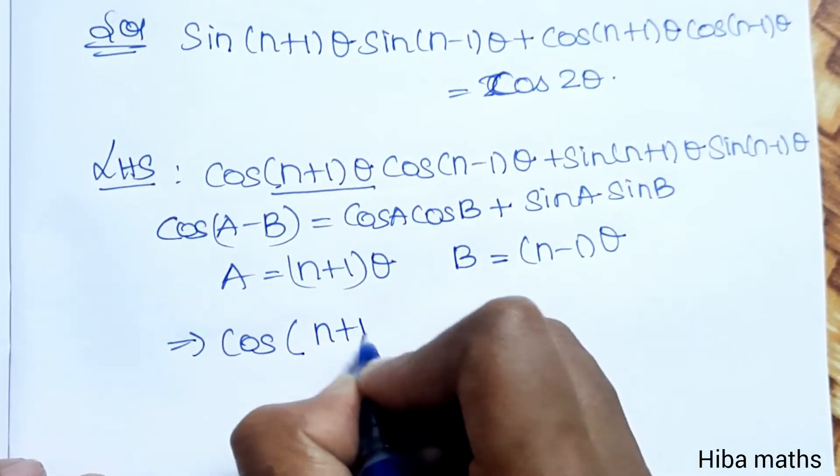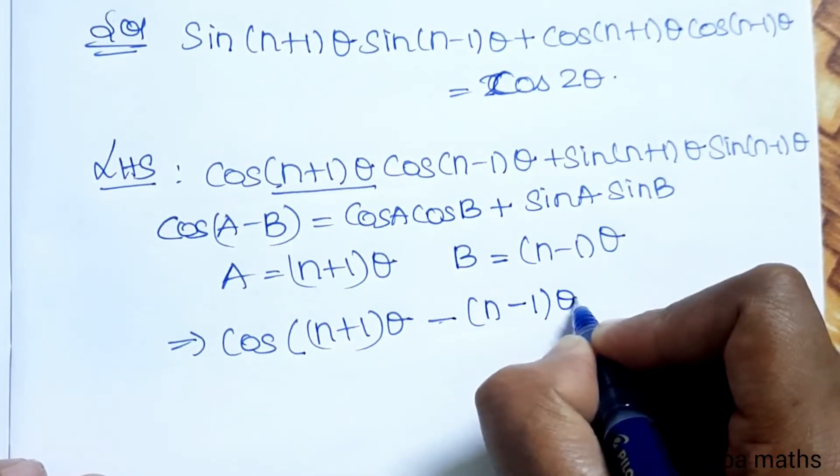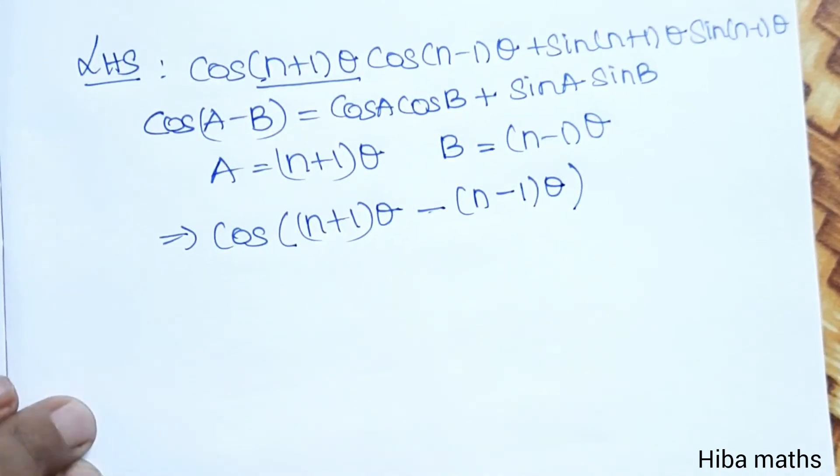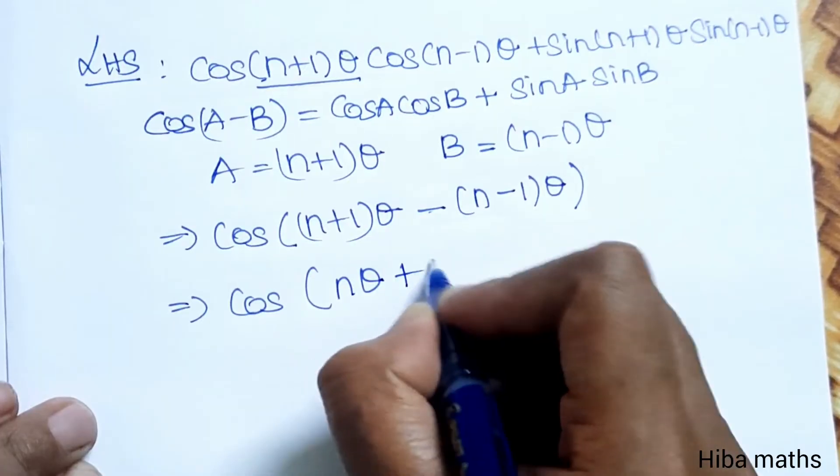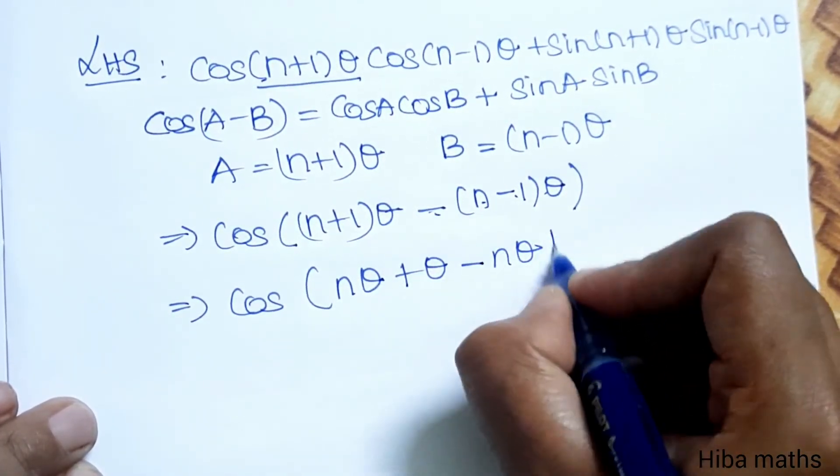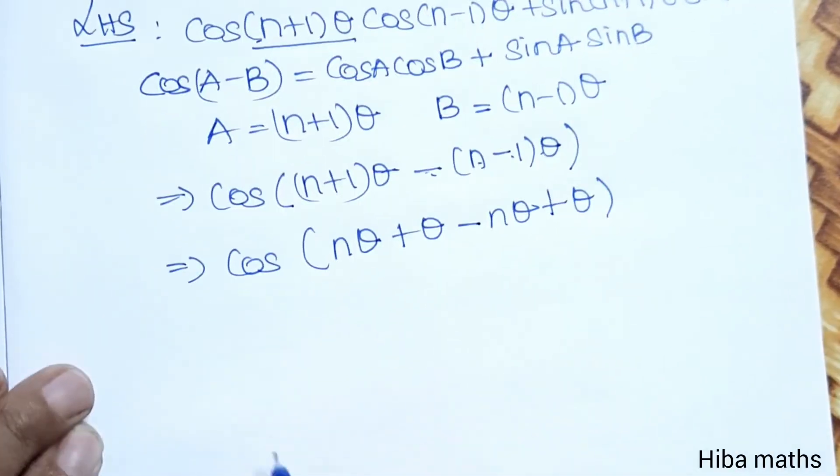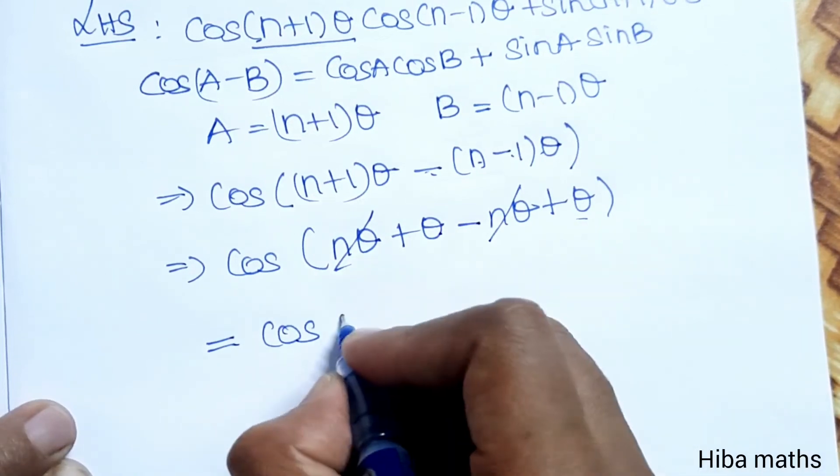cos((n+1)θ - (n-1)θ). Next step, expanding the theta terms inside: nθ + θ minus nθ minus (-θ), so nθ minus nθ cancels, giving cos(θ + θ) equals